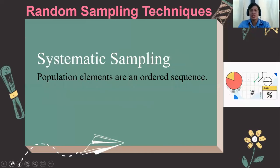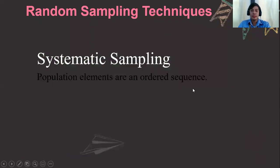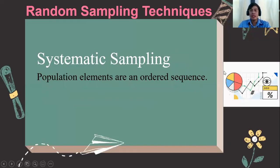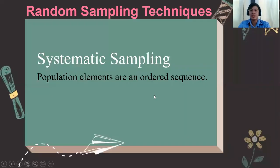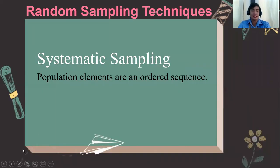The second type is systematic sampling, where population elements are in an ordered sequence. For example, your population may be arranged alphabetically or separated by gender. When they are ordered, you select participants by choosing every nth element — say, every third element — so the third, sixth, ninth, and so on will be selected as the sample. You follow a system or pattern.